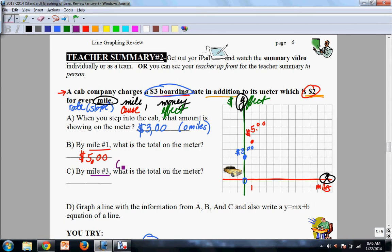Yes. Mile number three. We have three miles, so it's times two dollars. That's going to be six dollars, plus the boarding fee. That's nine dollars. So, skip two, go to three, and we're going to be at nine. One, two, three, four, five, six, seven, eight, nine, and that's nine dollars at three miles.